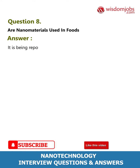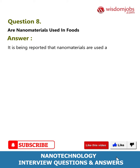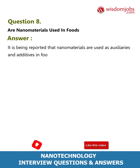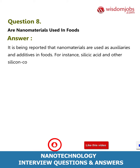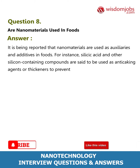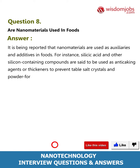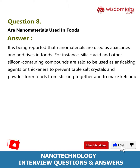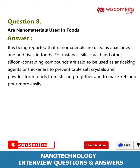Question 8: Are nanomaterials used in foods? It is being reported that nanomaterials are used as auxiliaries and additives in foods. For instance, silicic acid and other silicon-containing compounds are said to be used as anti-caking agents or thickeners to prevent table salt crystals and powdered foods from sticking together and to make ketchup flow more easily.